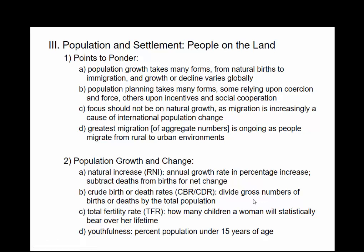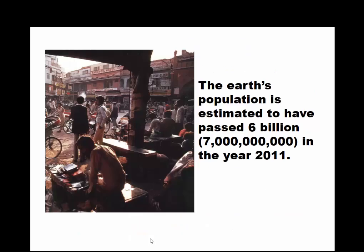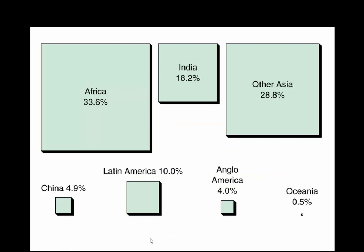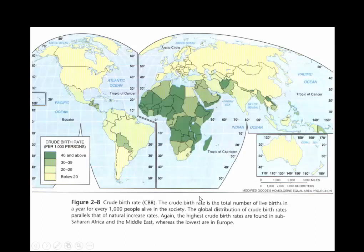Total fertility rates measure how many children women will statistically bear over a lifetime. We also have youth dependency ratio and elderly dependency ratio — the percentage of people under 15 or over 65 relative to those between 15 and 65. The Earth's population passed 7 billion in 2011. You can see the exponential increase of world population and the distribution across Asia, Latin America, and Anglo America.